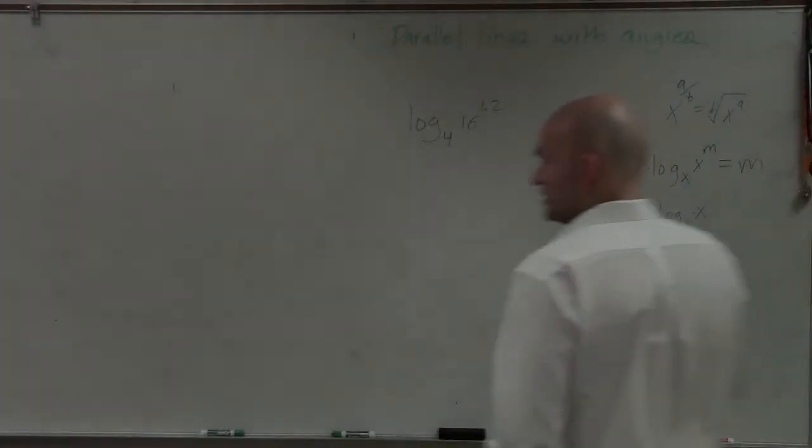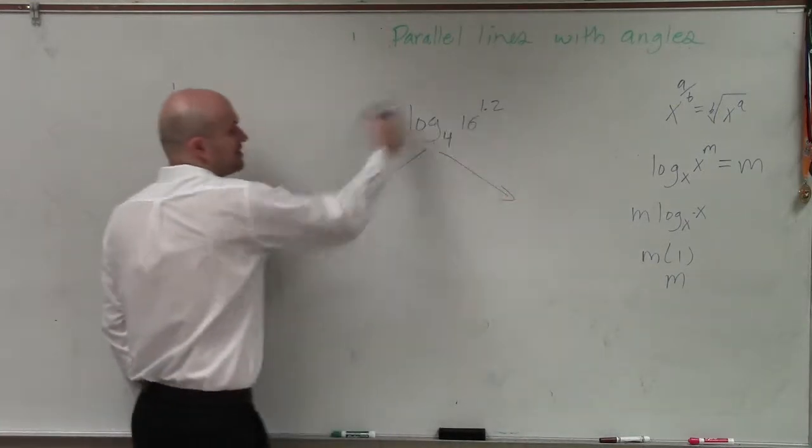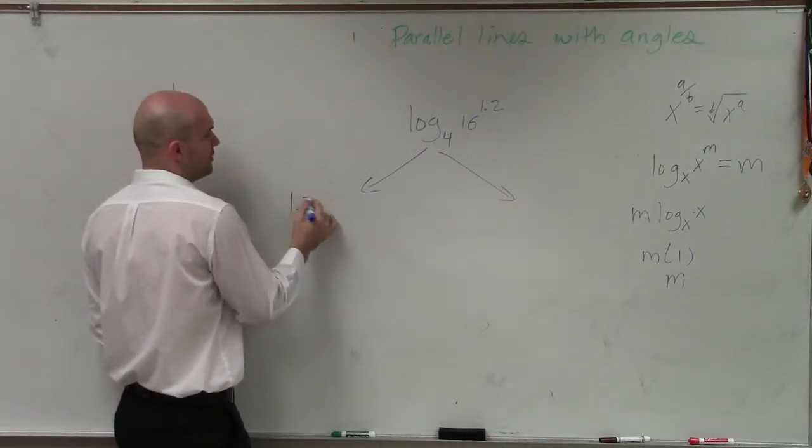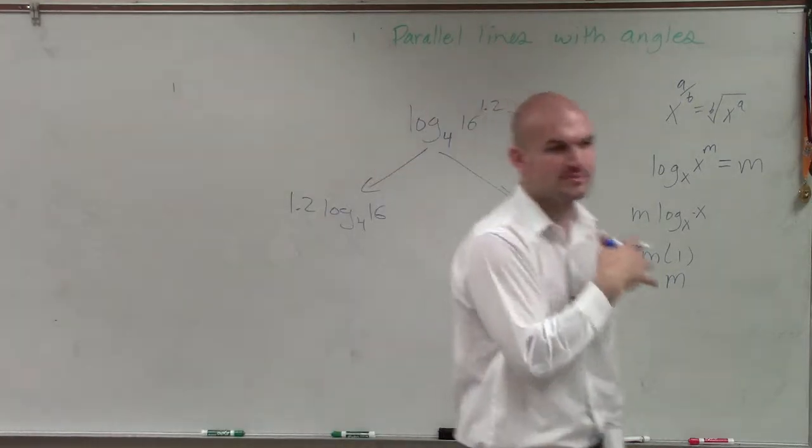Again, ladies and gentlemen, there's a couple ways we can do this. The first way, Michelle, what I would do is you could bring the 1.2 down. So it'd be 1.2 times log base 4 of 16, right? Bring in front as a product.